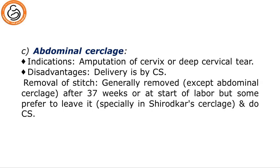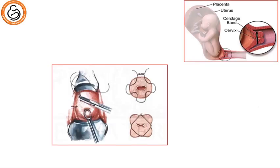The third technique is abdominal cerclage, indicated in cases of amputation of the cervix or deep cervical tear, and if there has been failure of vaginal Shirodkar or McDonald cerclage. Its disadvantage is that it necessitates delivery by cesarean section. We usually remove the cervical stitch at 37 weeks if the vaginal cerclage technique was used, while it is removed during cesarean section if abdominal cerclage was performed. This photo shows the site of application of the cerclage — the McDonald one where the purse-string is applied and tied posteriorly.